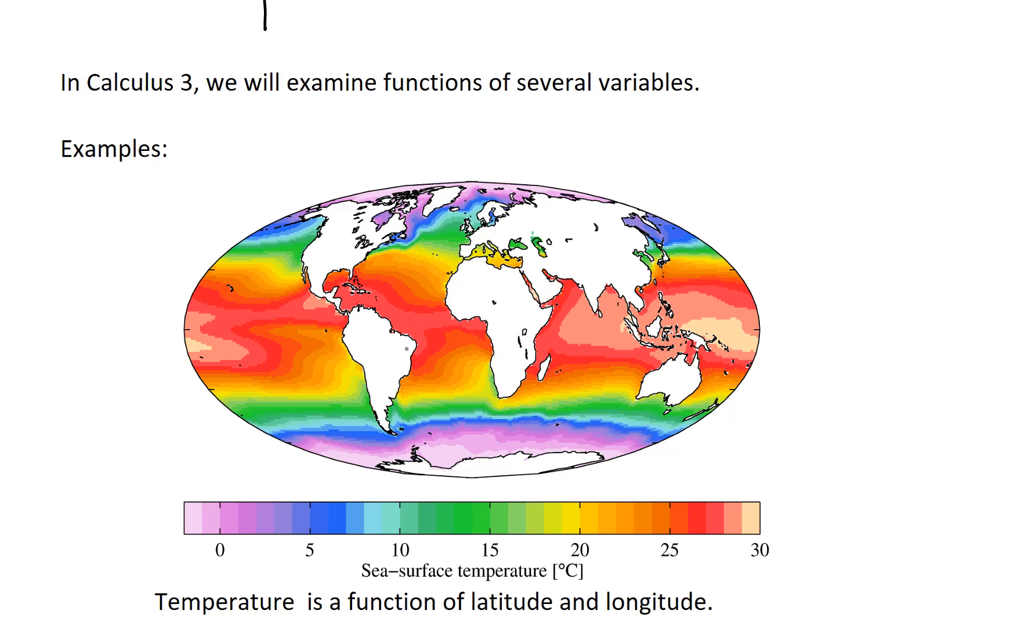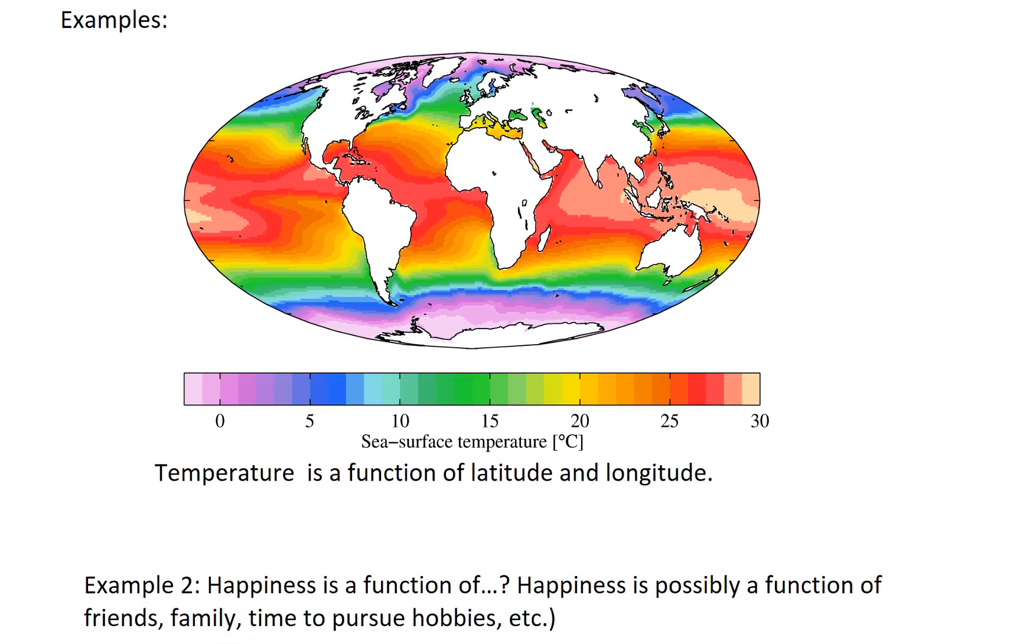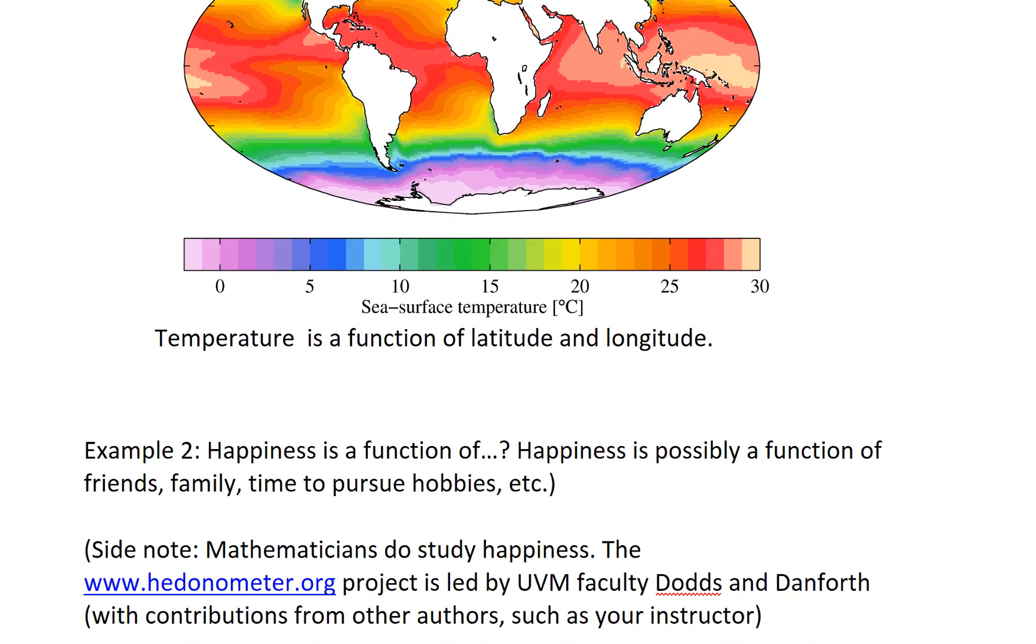A different example might be happiness. You know, what is happiness a function of? Well, we don't know. We're looking at that. But maybe it's a function of friends, how many friends you have, how much time you spend with your family, time to pursue hobbies, maybe money, maybe not money. We don't know. But the point is, is that a person's happiness is probably a multivariable function.